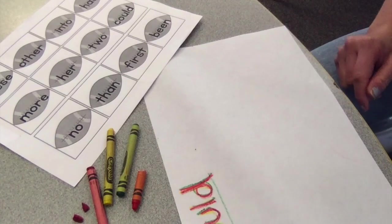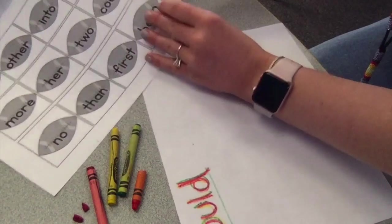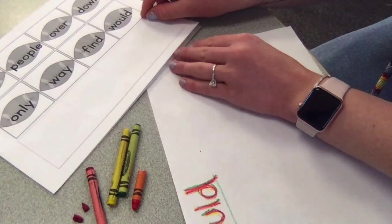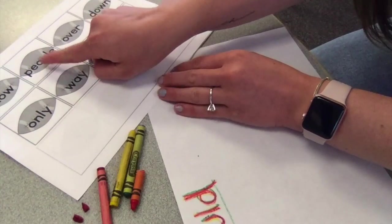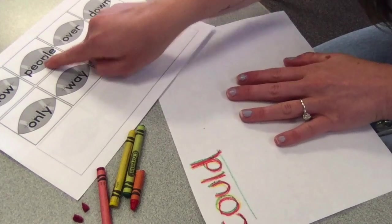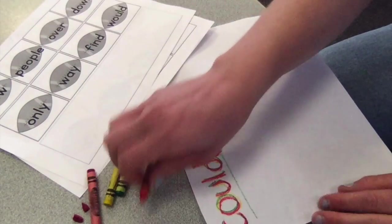Let me find another tricky word. Let me go onto this page. Oh, the word people. That's a tricky word for Miss B. So I'm going to write people. Here we go.